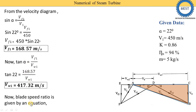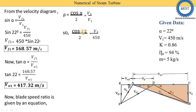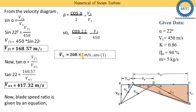The blade speed ratio, denoted rho, has two equations: Vb upon V1, and cos alpha divided by 2. We know alpha equals 22 and V1 equals 450. So putting cos 22 divided by 2 equal to Vb upon V1, with V1 equal to 450, we get Vb equal to 208.61 meter per second. In some numericals Vb is not directly given, so we use these equations to find it.